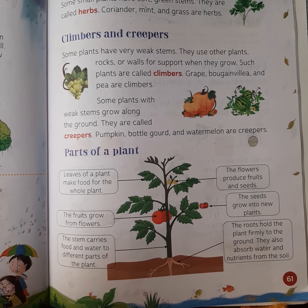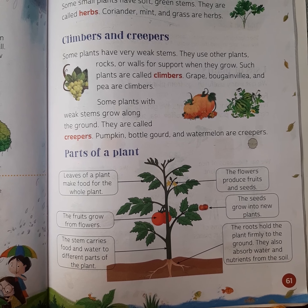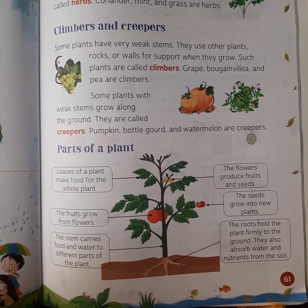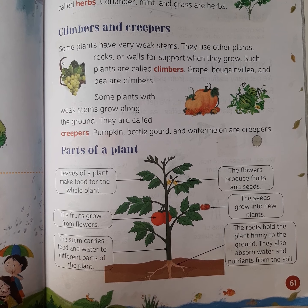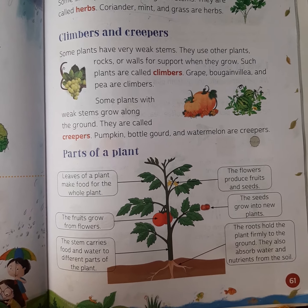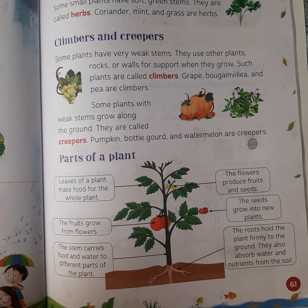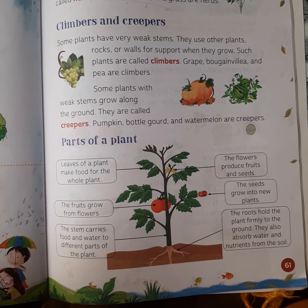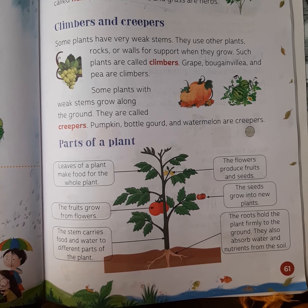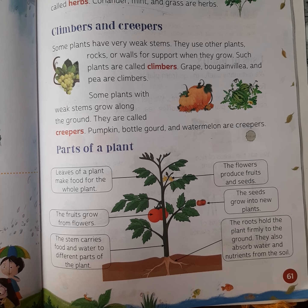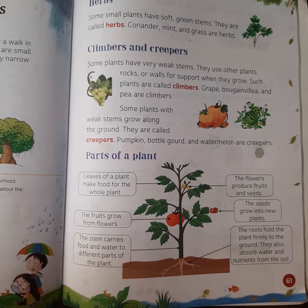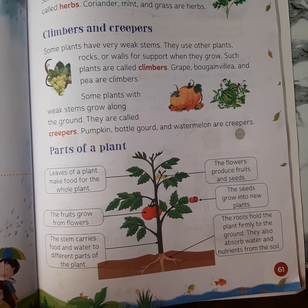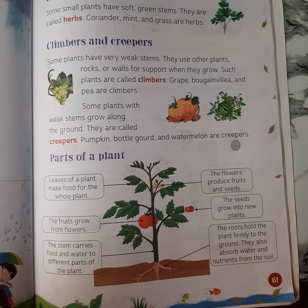Examples of climbers include grape, peas, and money plant. In many homes we have money plants. These plants cannot grow without help — without support like a wire or a wall, they cannot stand up on their own.